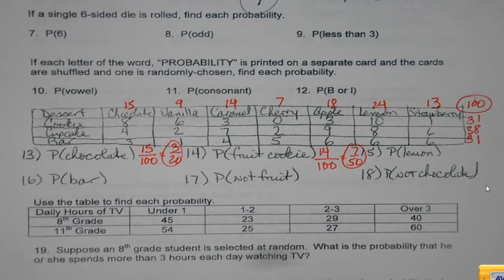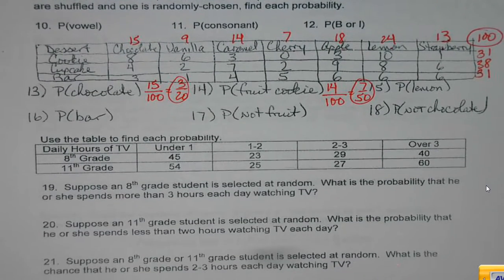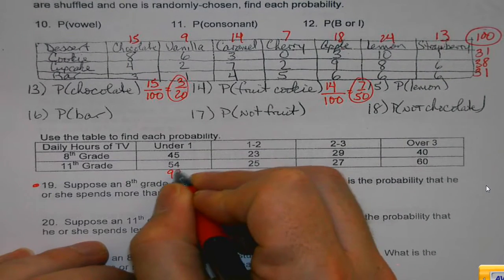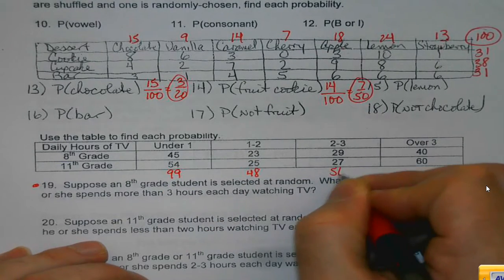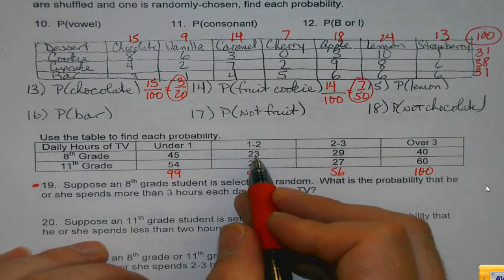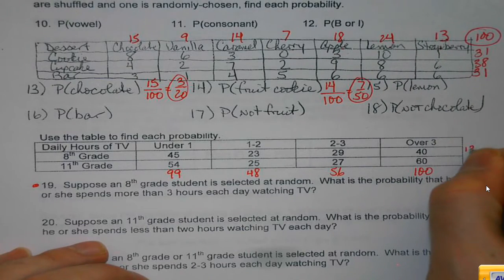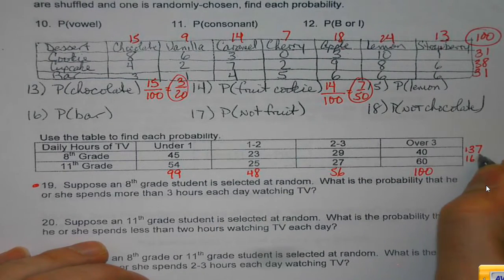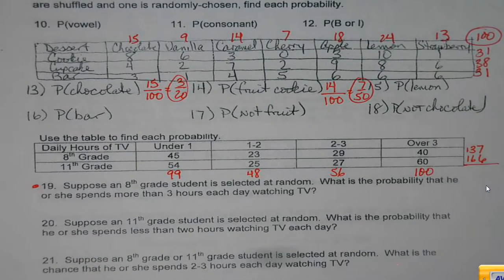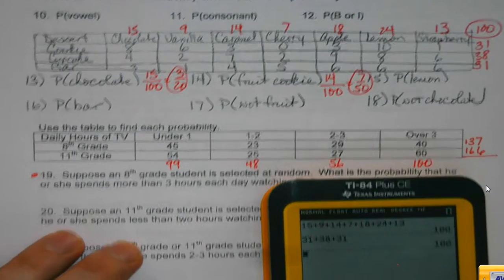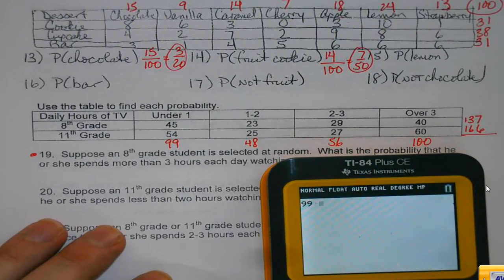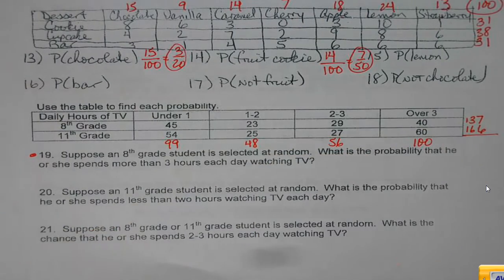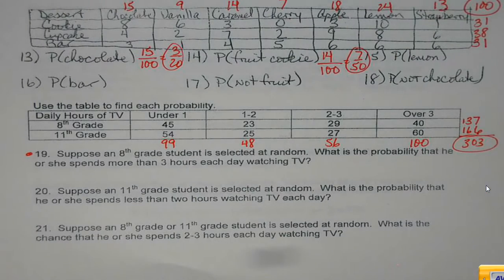So, then the last one I want to play with. Another chart. We're going to take a look at 19. Suppose an 8th grade student is selected at random. Okay, well, before I get going too far here, let me add up my rows and columns and make sure these add up the way they're supposed to. Nothing worse than doing a whole problem and then having nothing add up right. 303, 303, okay.